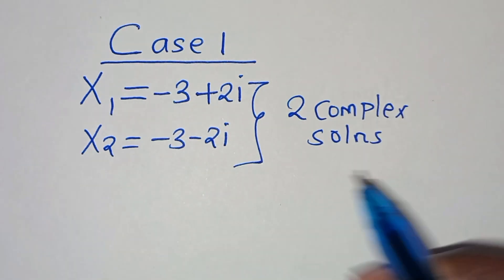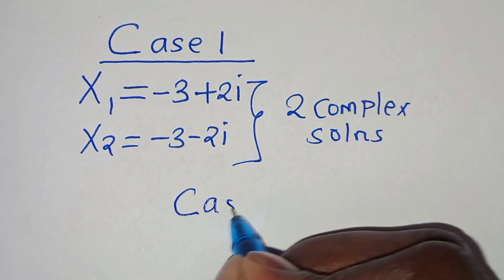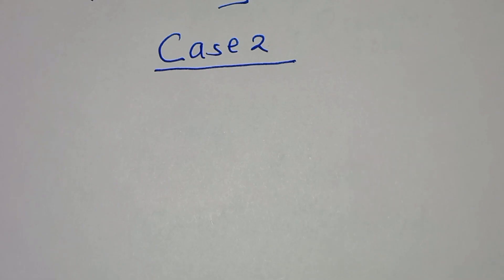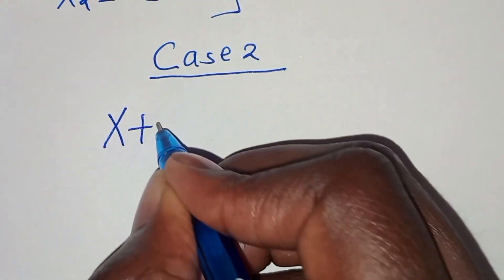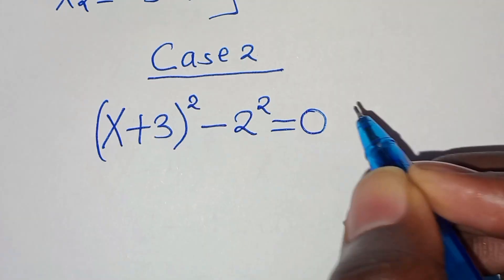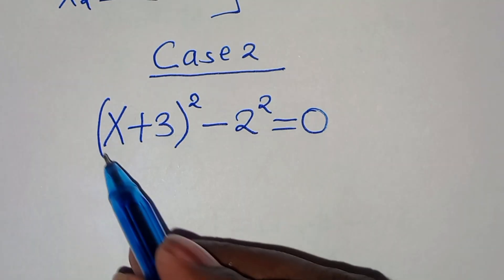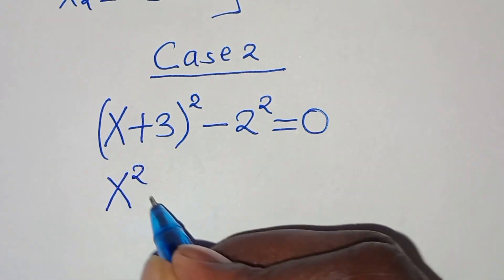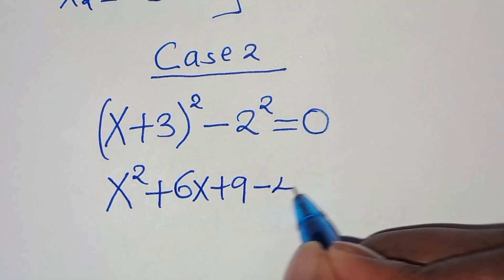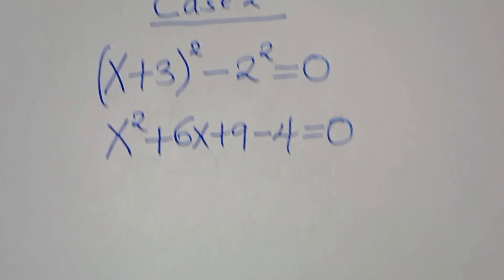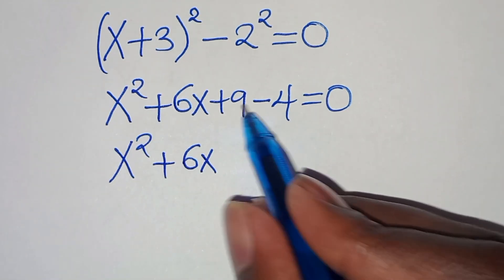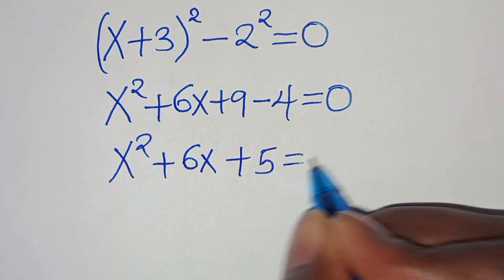Let's proceed to Case 2. We have x plus 3 raised to the power of 2, minus 2 to the power of 2, equals 0. Expanding, this is x squared plus 6x plus 9 minus 4, equals 0. So this gives us x squared plus 6x plus 5 equals 0.